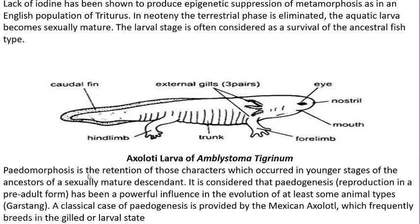Pedomorphosis is the retention of those characters which occurred in younger stages of the ancestor in a sexually mature descendant — these characters originally occurred in younger stages of the ancestor. It is considered that Pedogenesis, or reproduction in a pre-adult form, has been a powerful influence in the evolution of at least some animal types.